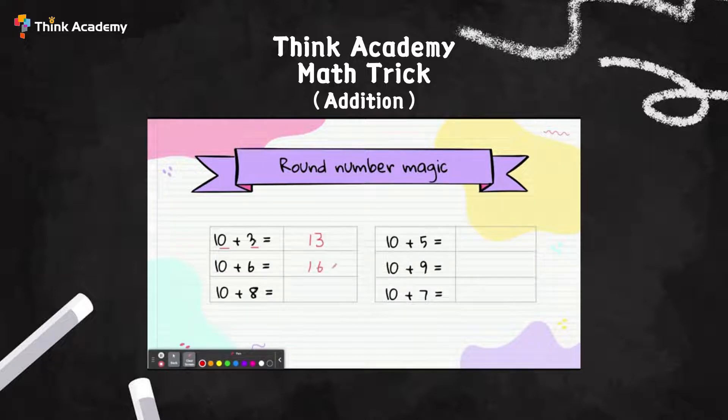It equals 16. You don't need to count up, just change the one digit. 10+8 equals 18. 10+5 equals 15, just change the 5. 10+9 equals 19.